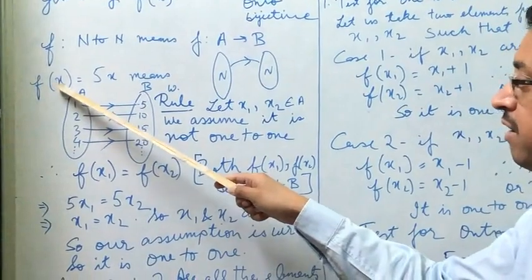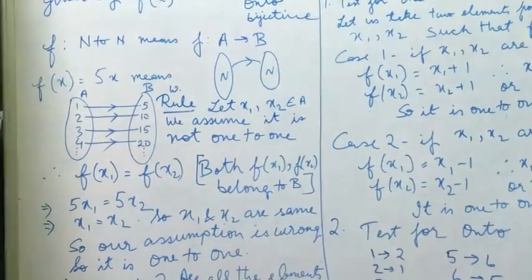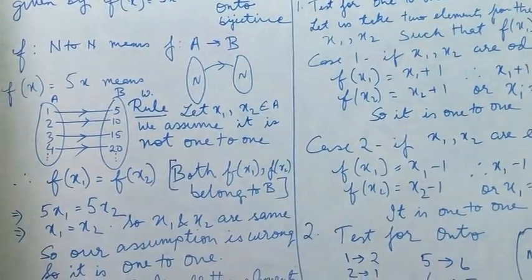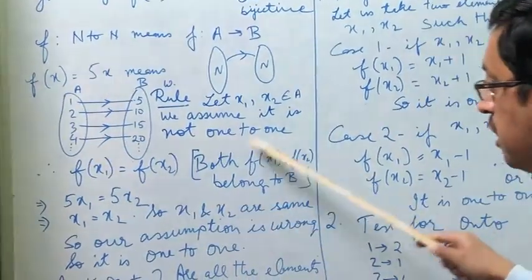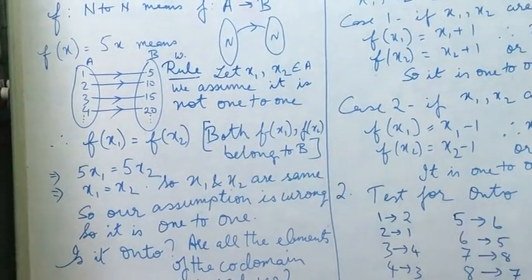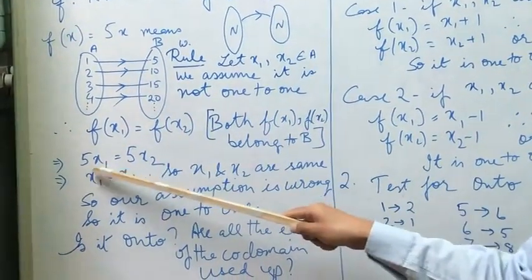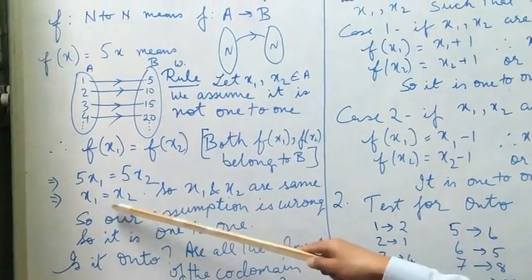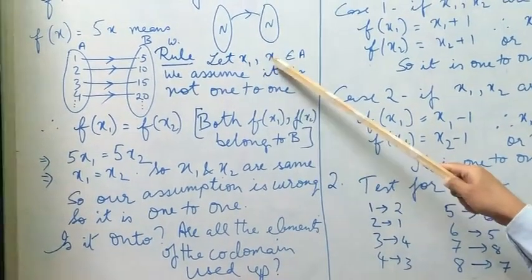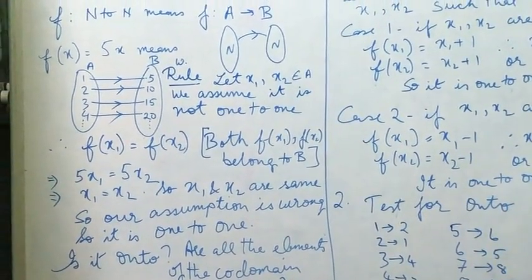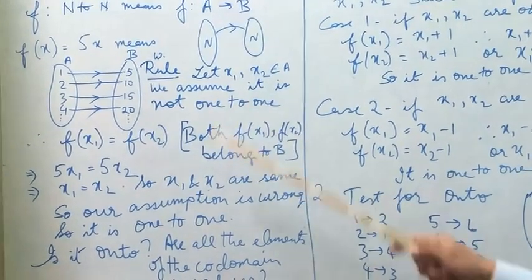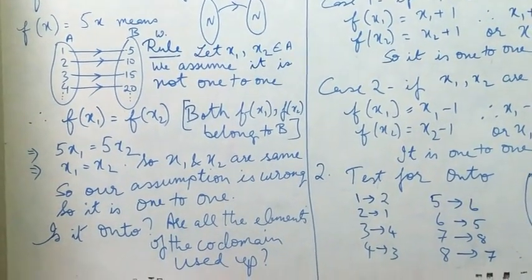f(x2) is the value we will get when we put the value of x2 inside the function. Both f(x1) and f(x2) belong to the co-domain. If we assume it is many-to-one, then f(x1) equals f(x2). So we put the value here, we get 5x1 equals 5x2, x1 equals x2. These two elements that we have taken from set A are basically the same. So our assumption is not correct. Therefore it is clear that it is a one-to-one function.